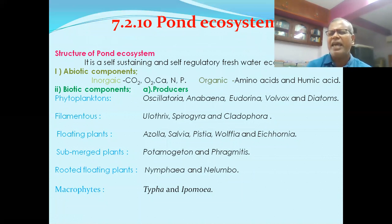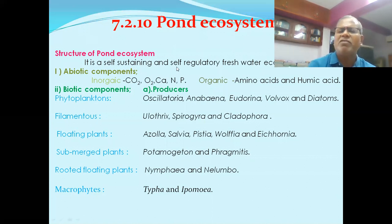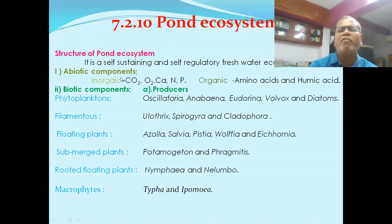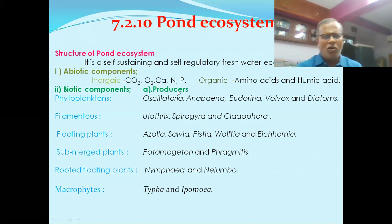The pond ecosystem has the ability to perform its own functions; external agencies are not needed, making it self-regulatory. It is an example of a freshwater ecosystem where salt content is less. Abiotic components include carbon dioxide, oxygen, calcium, nitrogen, and phosphorus as inorganic components, and amino acids and humic acid as organic components.